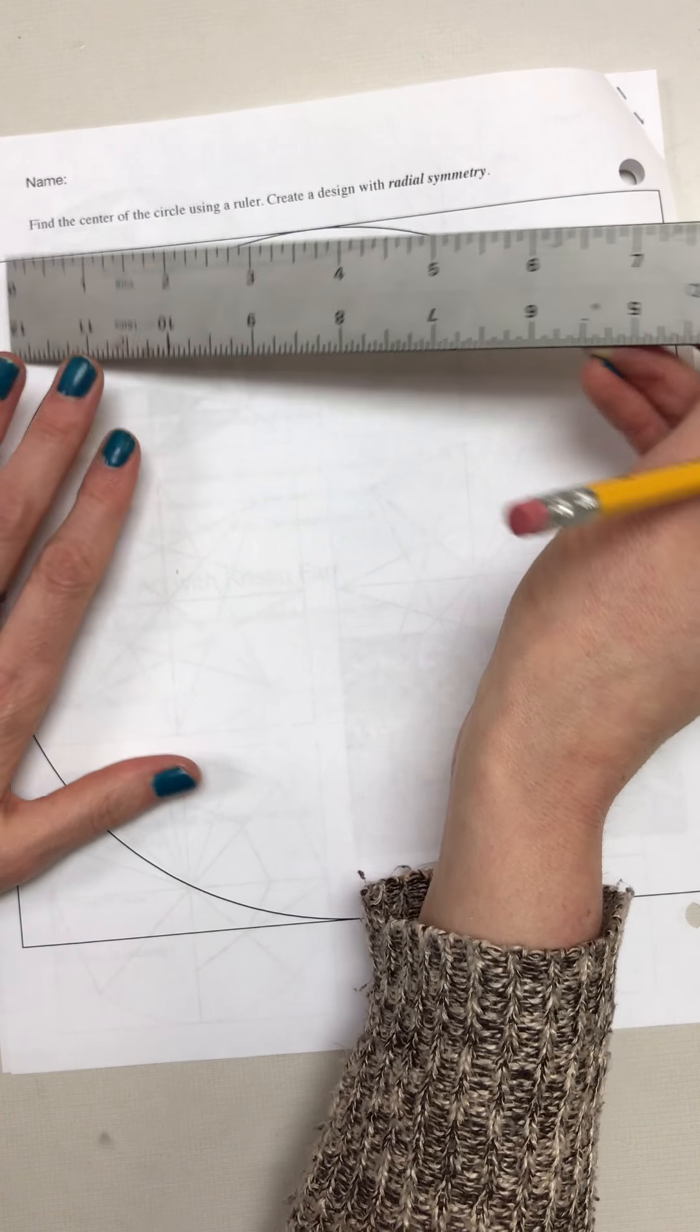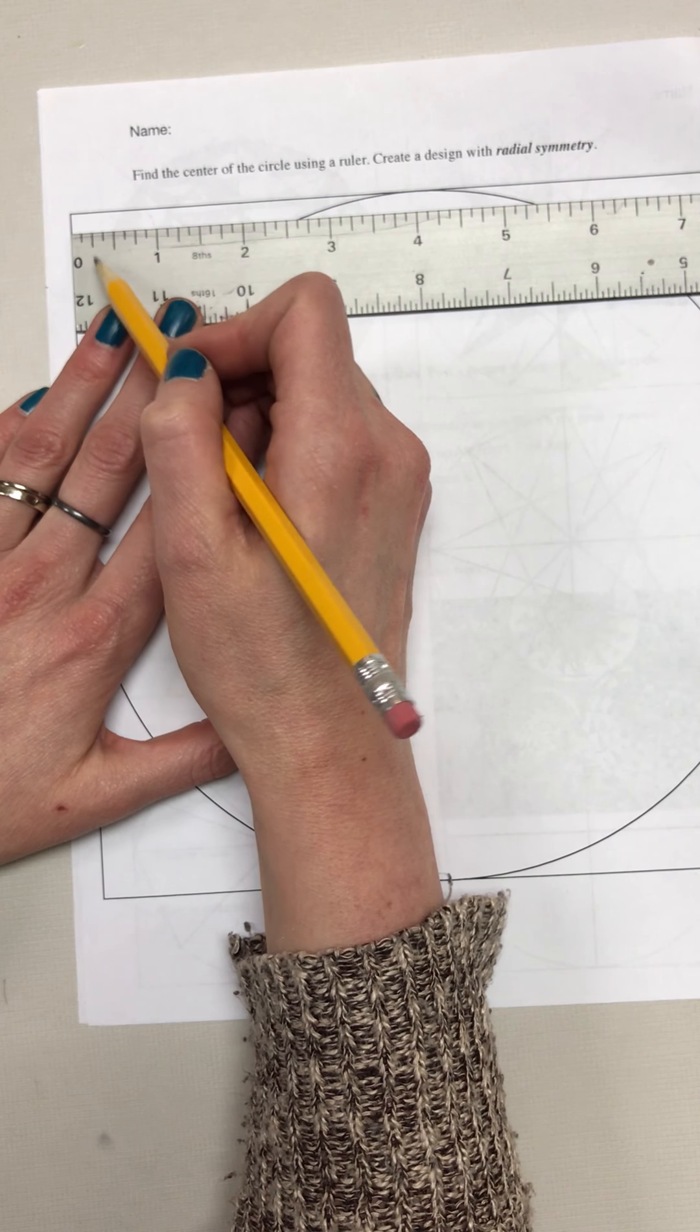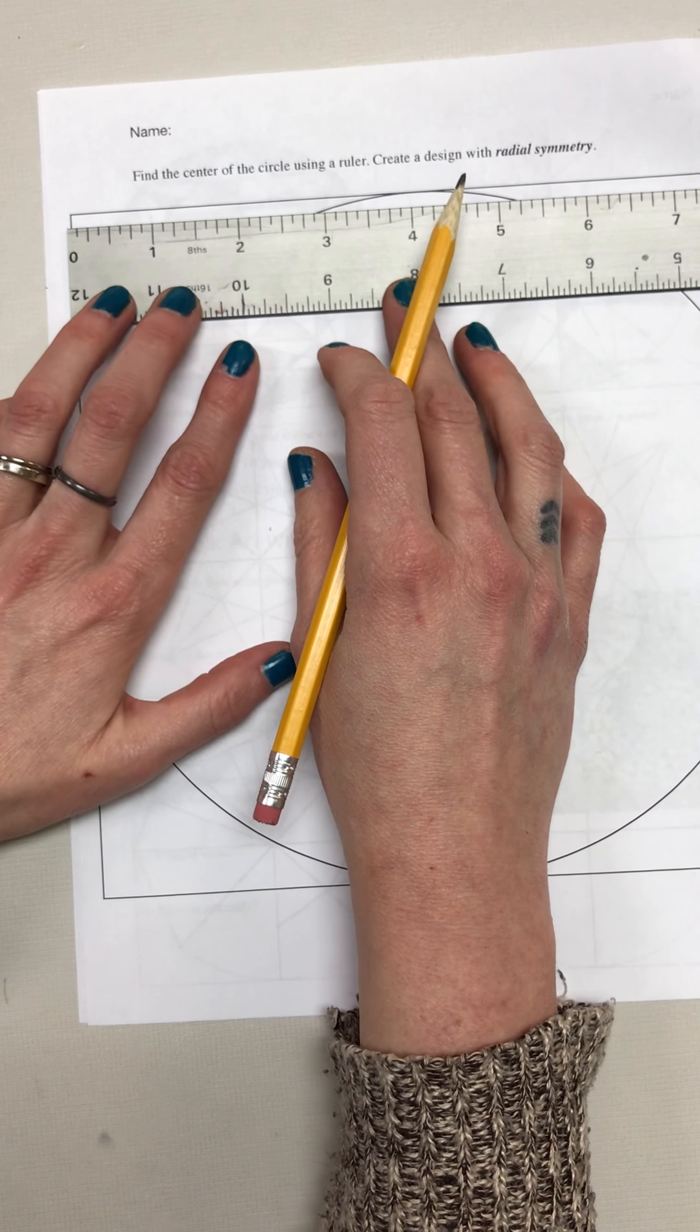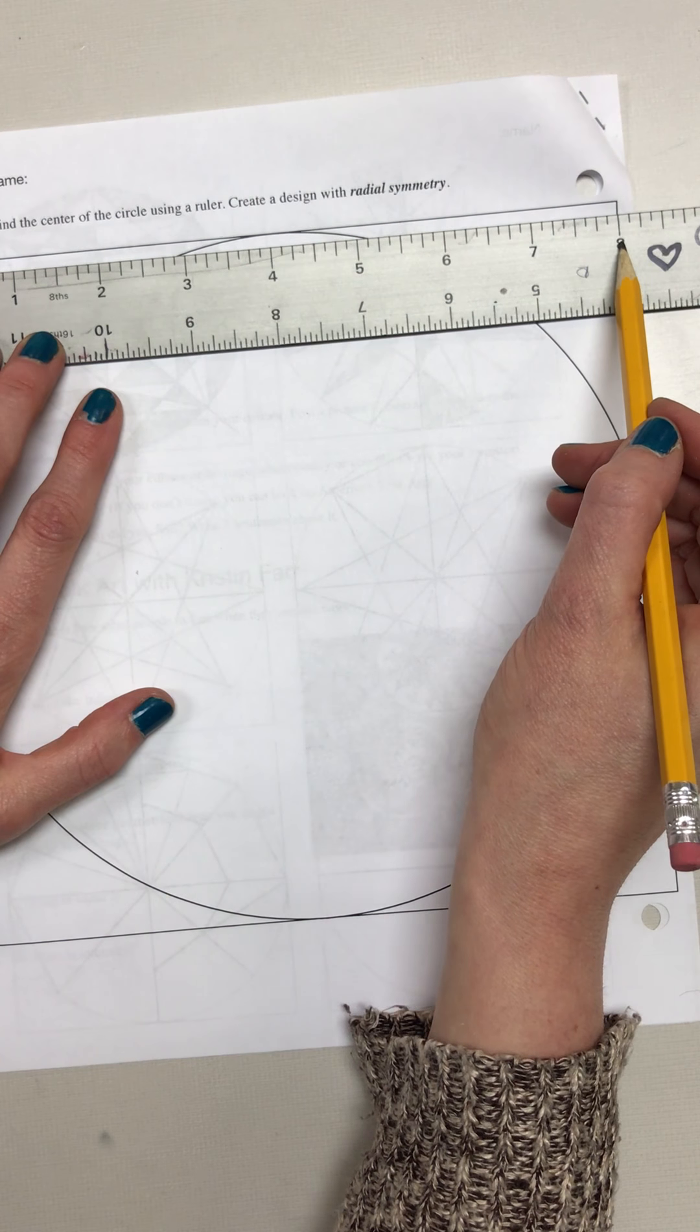Measuring—if I line my ruler up, and with this particular ruler, zero starts right at the edge. Sometimes zero is a little further, but if I line this up, I look at the ending. I can see it's eight inches long, so halfway would be four inches.